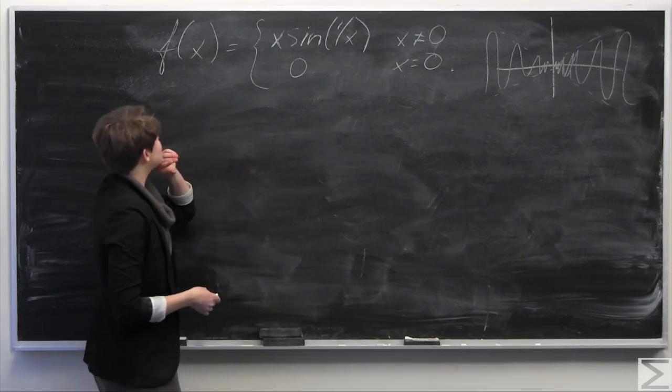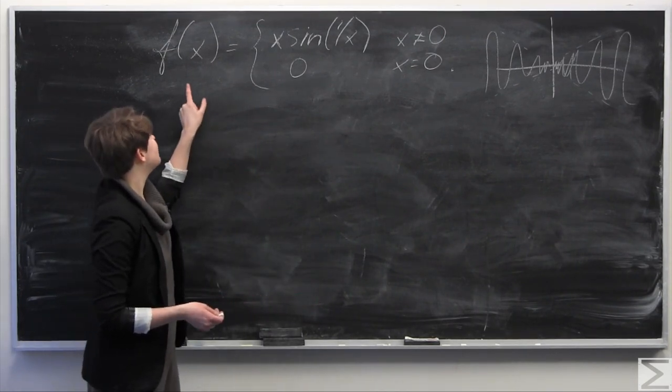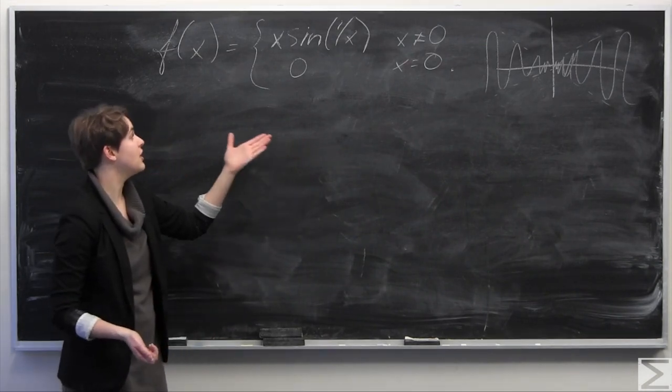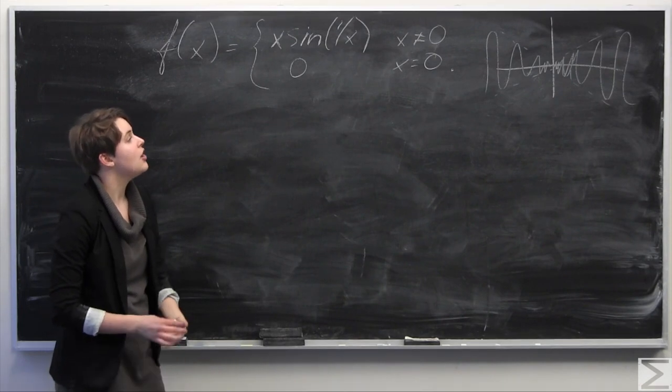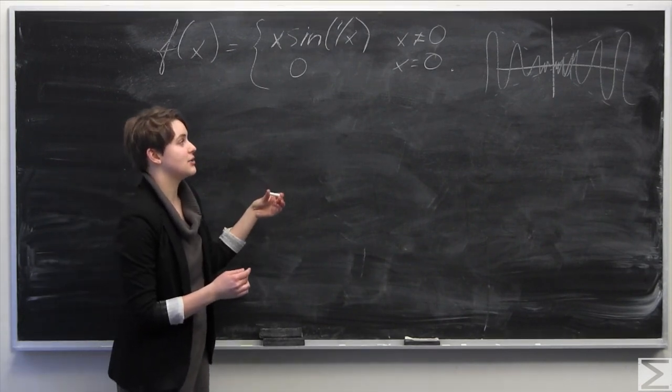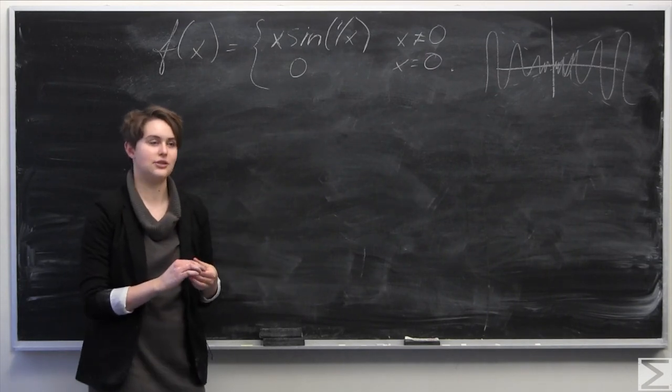So this week's Problem of the Week asked you, given the following function where f of x equals x sine of 1 over x when x does not equal 0 and 0 at x equals 0, you were asked to prove that this function is continuous at x equals 0, but is not differentiable at x equals 0.